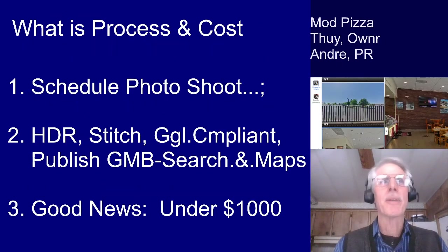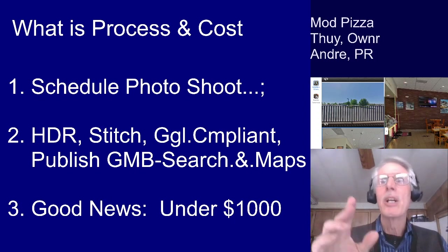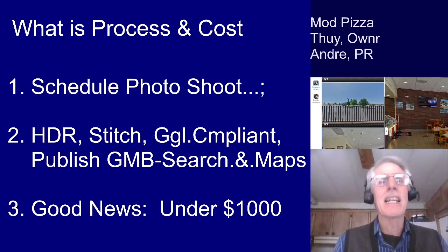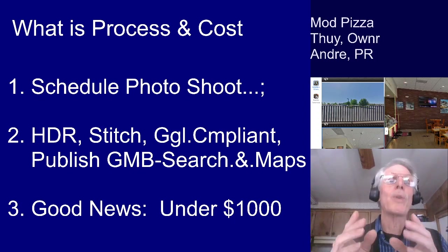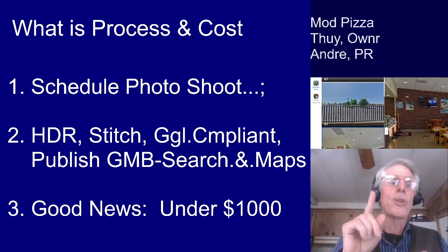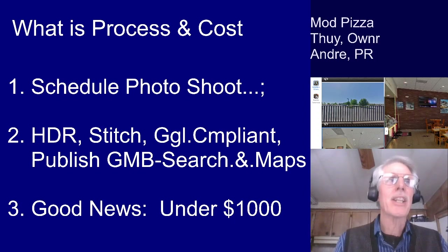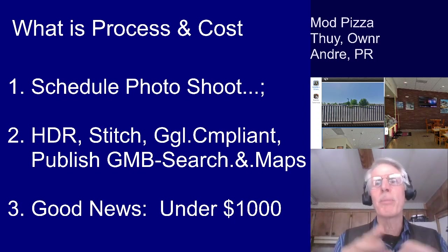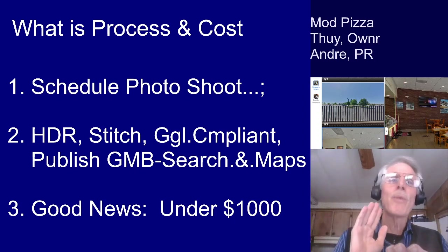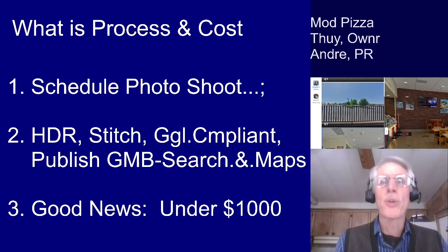Let's take a look at the process for the virtual tour. The first step: we simply schedule a photo shoot. We come out with our 360-degree camera equipment, do a walkthrough with you, and look at the highlights and the layout. Once we've completed the photo shoot, we bring it back to our office. We publish it after doing HDR processing, which is quality control for the photos, then stitch it all together. We run it through Google compliance software to make sure it's compliant with all Google platforms, and then we publish it to the Google My Business page — where it's available for Google searches and Google Maps.